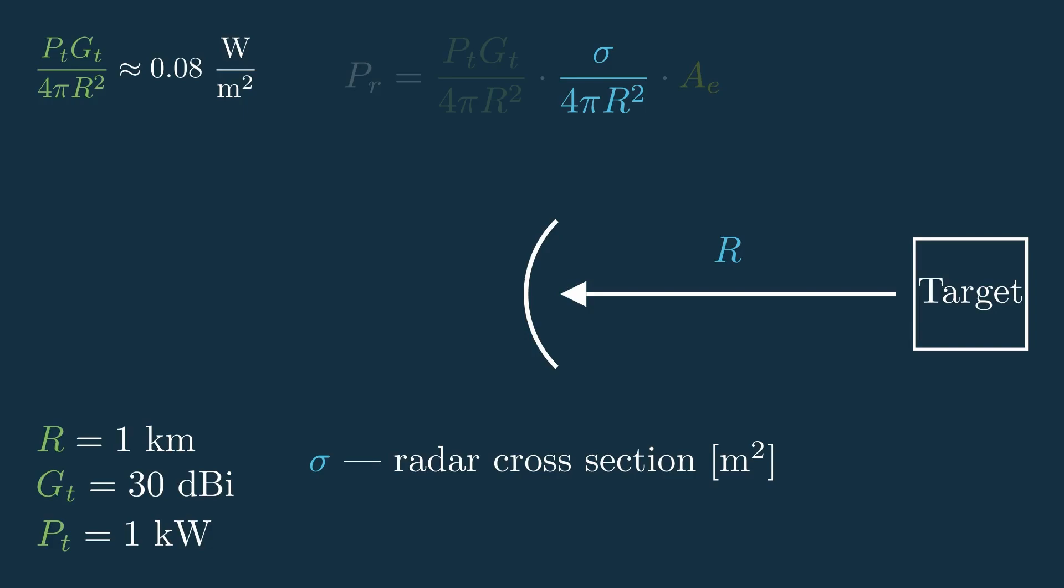This radar cross section, or RCS, determines how much the signal bounces off the target. And in general, the larger the target, the more energy is reflected, so it'll go in the numerator. For this, let's just use a simple number, 1 meter squared.